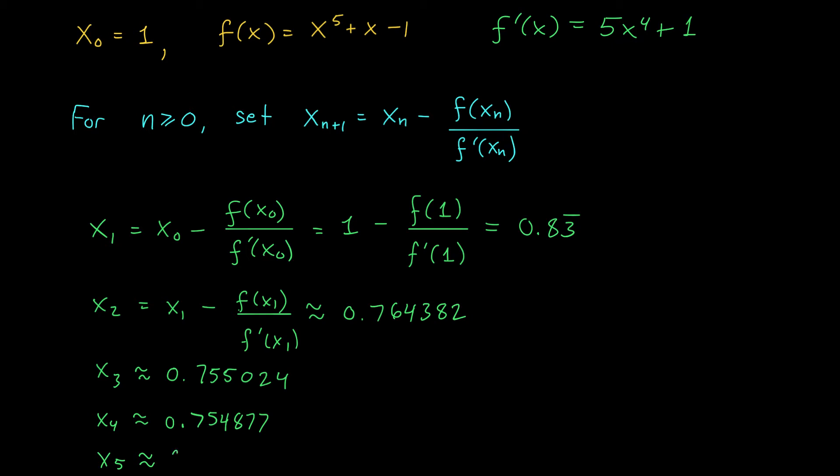x5, we use the same formula, we get 0.754877. And what do you know? x4 and x5 now agree in all six decimal places. So we can be pretty confident that this will be a good approximation for our root. We conclude that the root is approximately equal to 0.754877.